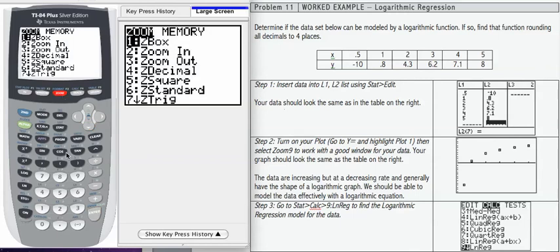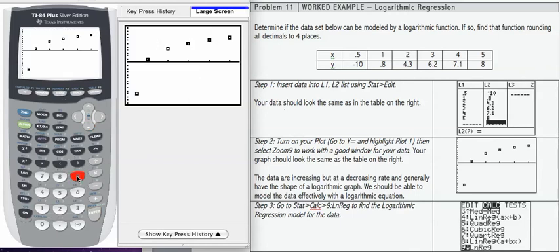I'm going to use Zoom 9, which is the stat zoom, and that's going to give me a picture of my data. If I look at how the data are arranged, it looks like a logarithmic function will model these very nicely. The reason I say that is because the data start off increasing very rapidly, and then continue increasing, but at a slower and slower rate. That's a classic logarithmic shape. So now that we are pretty sure that a logarithmic model is going to work, we need to find that model.